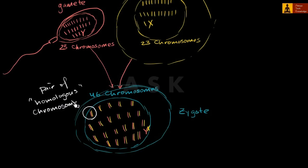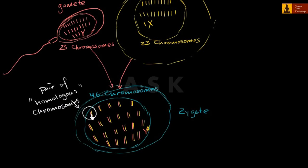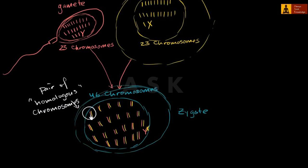What does that mean? Well, in general these two chromosomes — you've got one from your father and one from your mother — they code for the same things. They code for the same proteins, but there are different variants of how they code for those proteins and traits. For example, if there was a gene on the one from your father that helps code for hair color, there would be another variant of that gene on the chromosome from your mother that also helps code for hair color.